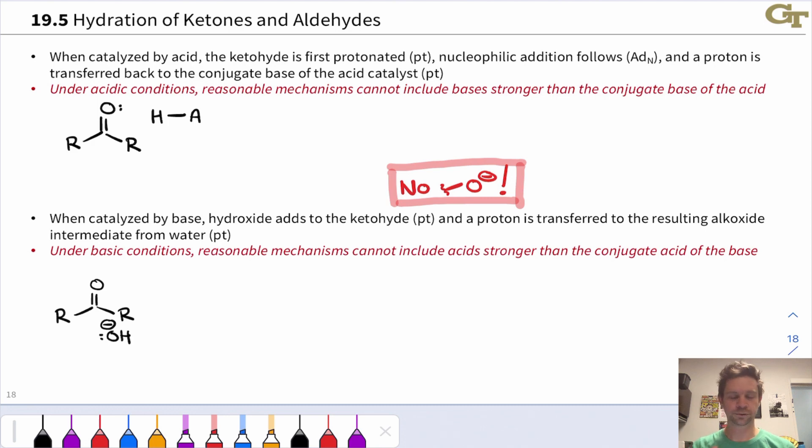Instead, what happens is proton transfer to the carbonyl oxygen from the acid, HA. Electrons flow like this. This generates a protonated carbonyl intermediate, which is now very electrophilic at the carbonyl carbon. So this can react with water since all we're doing now is shifting the positive charge from one oxygen to another. This nucleophilic addition step establishes that key new carbon-oxygen bond—the bond between the nucleophilic oxygen and electrophilic carbonyl carbon that we find in the hydrate.